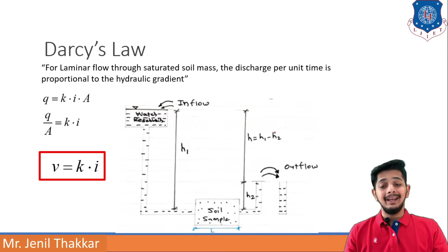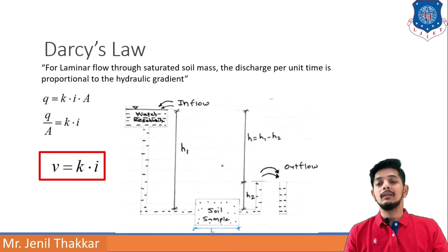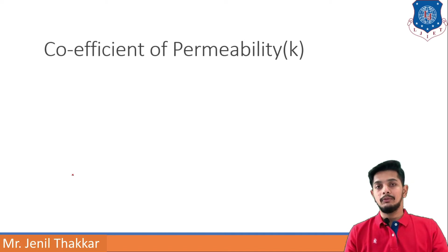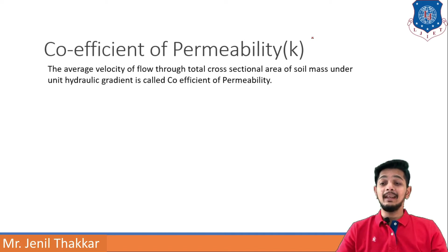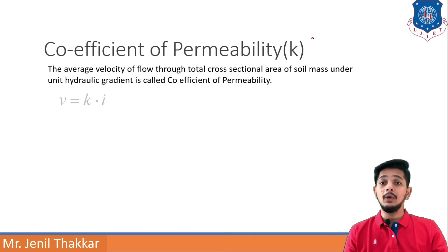H divided by L gives the hydraulic gradient i. The cross-sectional area of the soil sample can also be measured, so we can find q, i, and A, and from those calculate k. Dividing q by A gives velocity v = k × i, because q/A is velocity. So the coefficient of permeability k equals the average velocity of flow through the total cross-sectional area under unit hydraulic gradient.